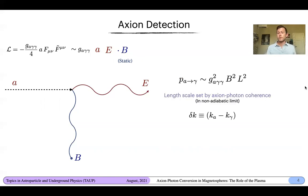Now, the probability for this process to take place, as you might guess, is proportional to the coupling squared to the magnetic field squared. And by unit analysis, you can sort of guess that you're missing a factor of length scale squared. In the non-adiabatic limit, this length scale is going to be set by the coherence length of the axion-photon. Essentially, how far or how long do the axion and photon coherently oscillate, which is dictated by the momentum mismatch between these particles.